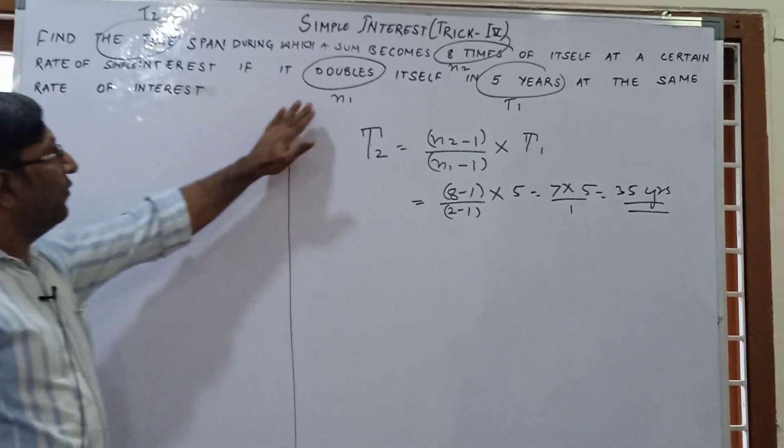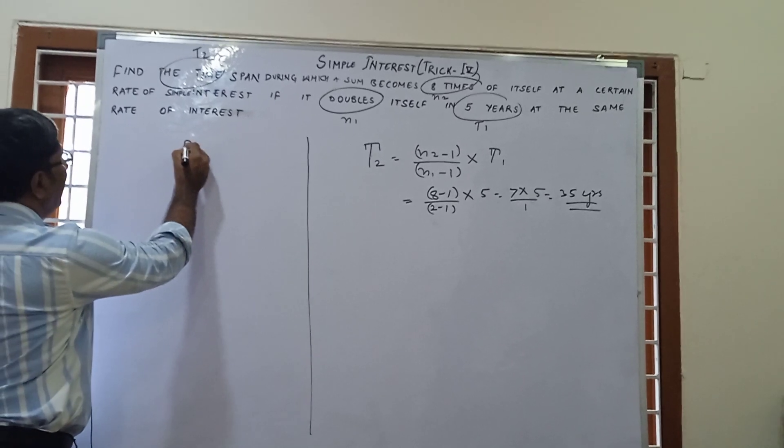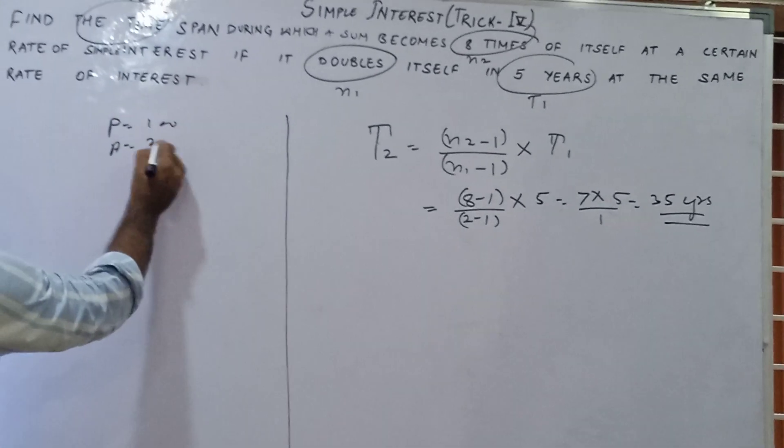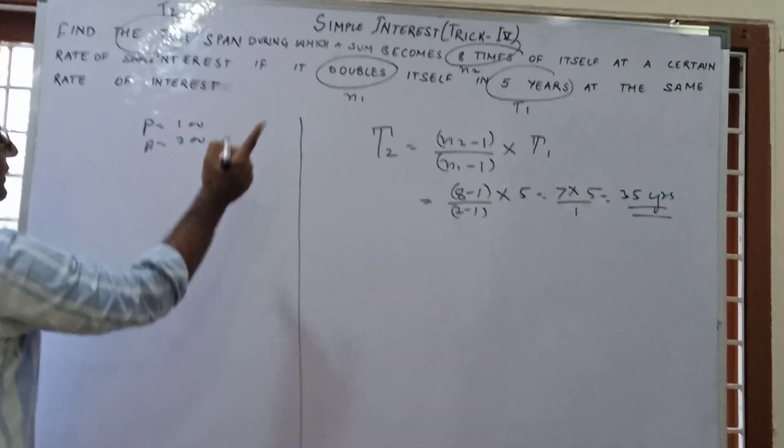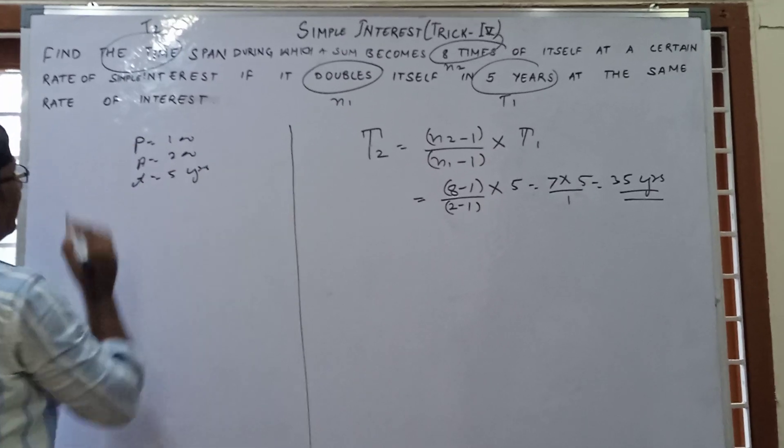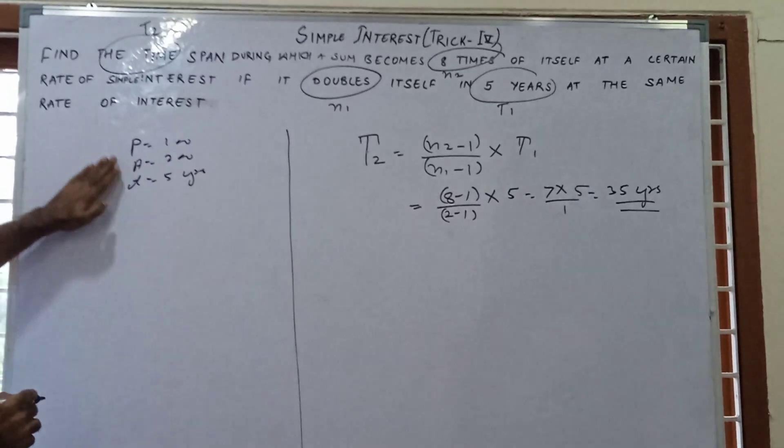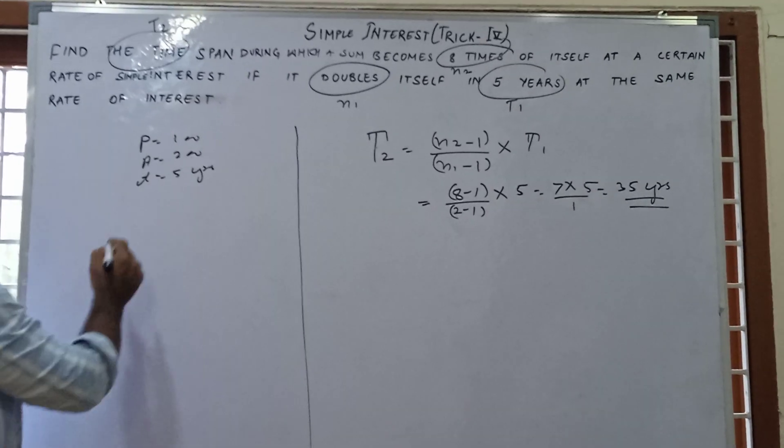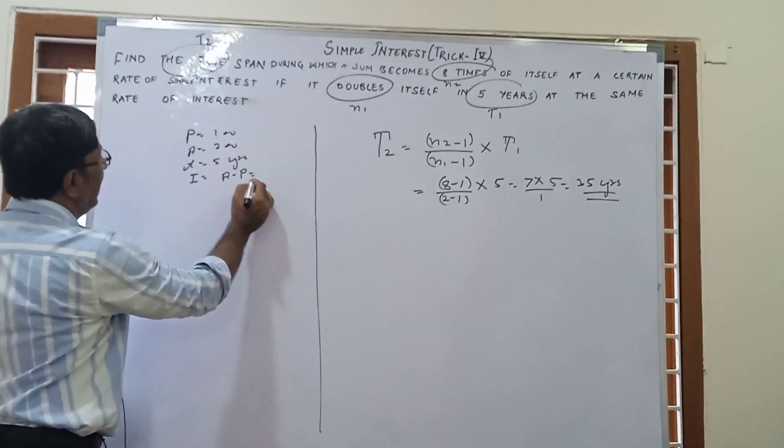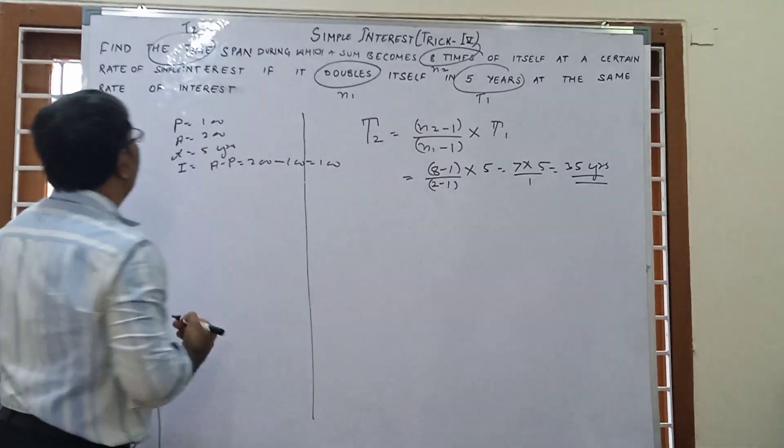In the first case, it doubles itself in 5 years. So suppose principal P is 100, then amount is doubled, that is 200. Time is given T equals 5 years. We have principal and amount, so we can find simple interest. Simple interest I equals A minus P, so 200 minus 100, that is 100.